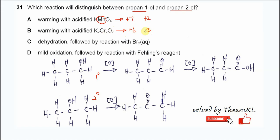So KMnO4 and potassium dichromate cannot distinguish between propan-1-ol and propan-2-ol. Therefore, these two are not the answer.